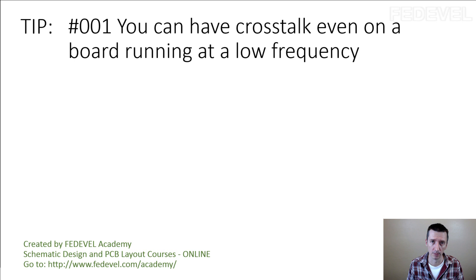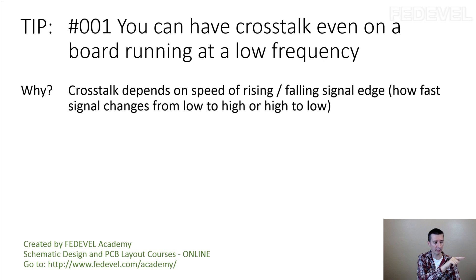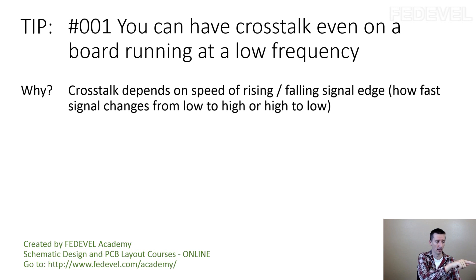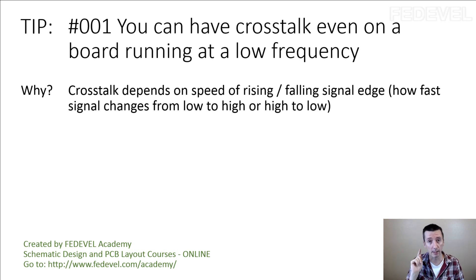When I say sharp edge, what does it mean? It doesn't depend on frequency — it depends on how sharp the edge of the signal is. Crosstalk depends on the speed of the rising and falling signal edge. Imagine you have a signal that is low and it suddenly changes to high — that is a very sharp edge. Compare that to a slower signal that gradually changes from low to high. Which one generates more crosstalk? The very quick one — this will generate a lot of noise.